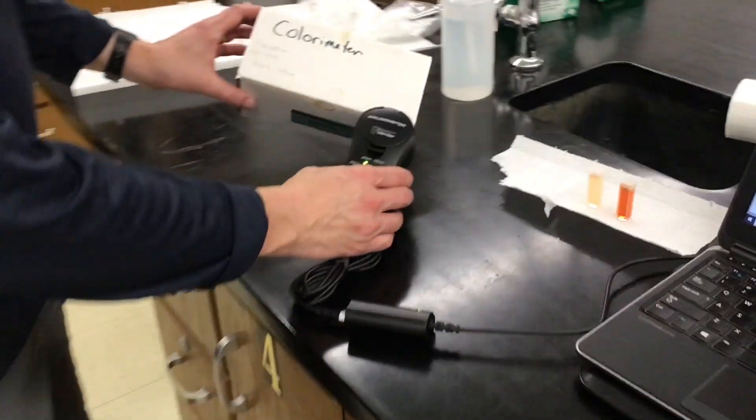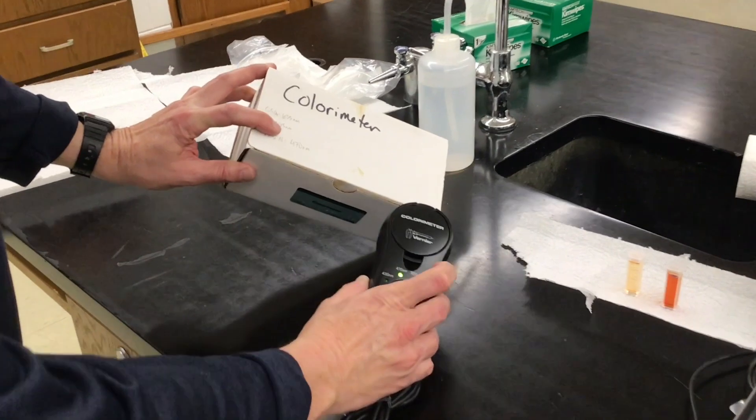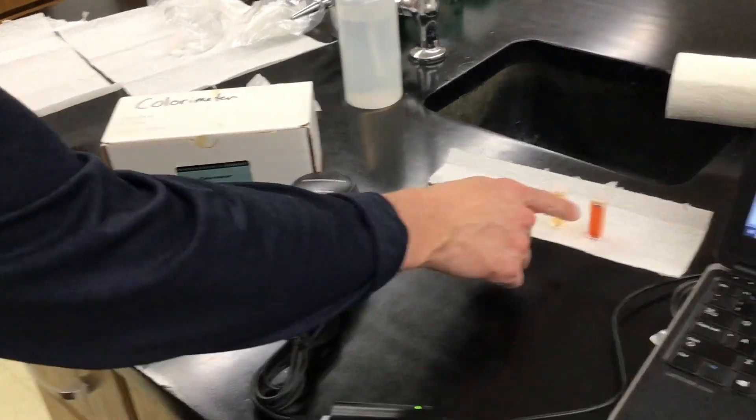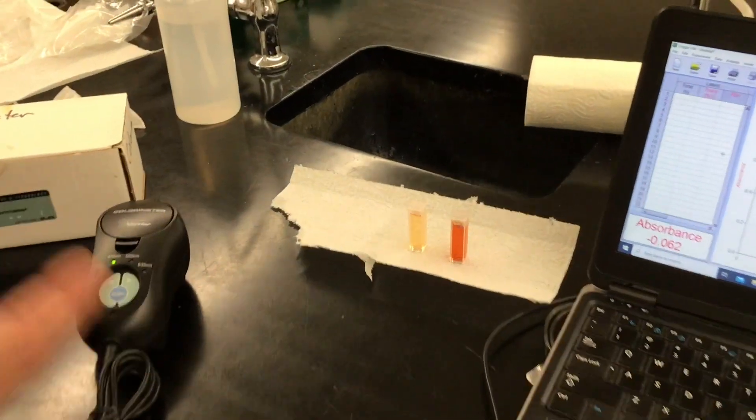Okay, first of all, I have the wavelength set at 470 and that's in the blue region because we're measuring a red solution. So we want a different color.